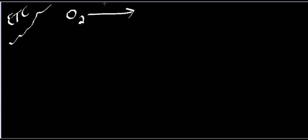So in my respiratory chain, here's my electron transport chain. Cytochrome oxidase — if you remember the reaction — it's going to take oxygen with four electrons, doing them one at a time, and reduce it to two waters. That's the mechanism of cytochrome C oxidase. But if you think about it, oxygen is getting one electron at a time.